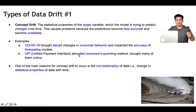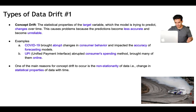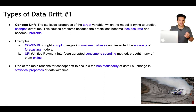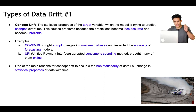Similarly, with the introduction of UPI — Unified Payment Interface — it disrupted customers' spending methods, bringing many customers online who were previously spending in an offline mode. So one of the main reasons for concept drift to occur is the non-stationarity of the data, meaning the statistical properties of the target variable change with time. This is concept drift, where the target variable drifts.